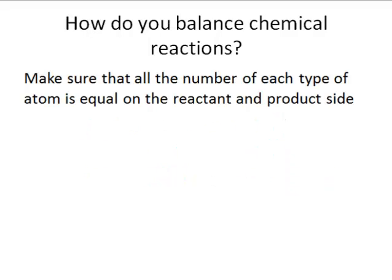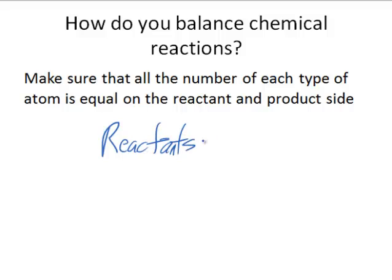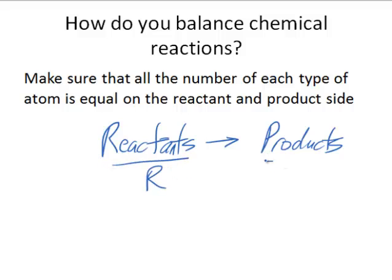How do you balance chemical reactions? Make sure that the number of each atom is equal on the reactant and on the product side. Remember, the reactants are the left side of the reaction, and the products are the right side of the reaction. I'll shorten reactants to R and products to P.